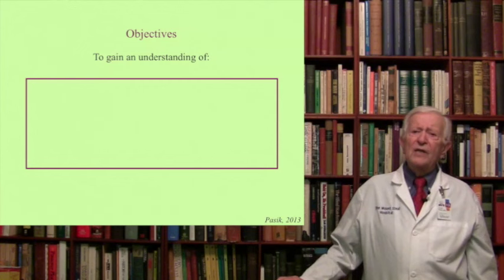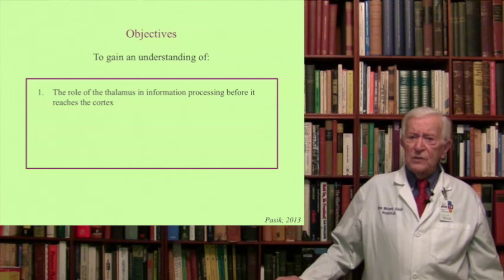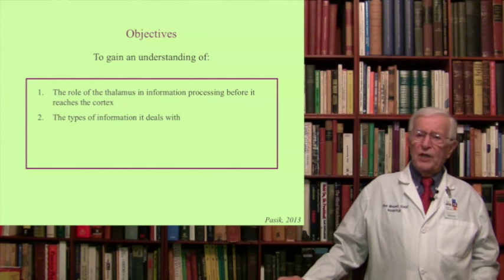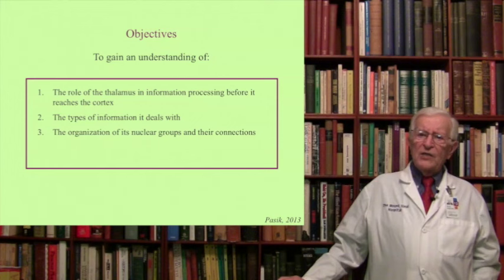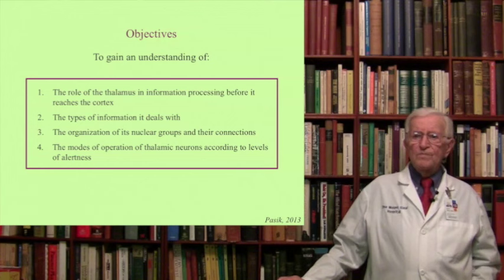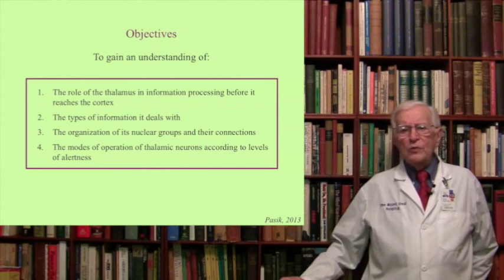You have to understand from this material: the role of the thalamus in processing of information before it reaches the cerebral cortex, the types of information that the thalamus deals with, the organization of the nuclear groups and their connections, and finally the modes of operation of thalamic neurons according to levels of consciousness. We discussed part of this material when we dealt with the visual system at the level of the lateral geniculate nucleus — now we are going to go back to that and give more details of its functioning.